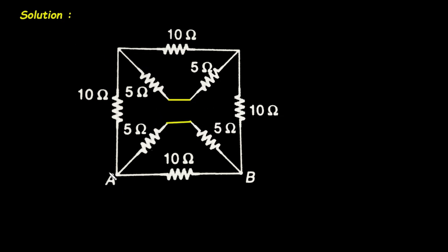Now we can also assume if we apply voltage between A and B, then same current will flow between these two resistances. And same current will flow between these two resistances. So that's why also we can separate them.